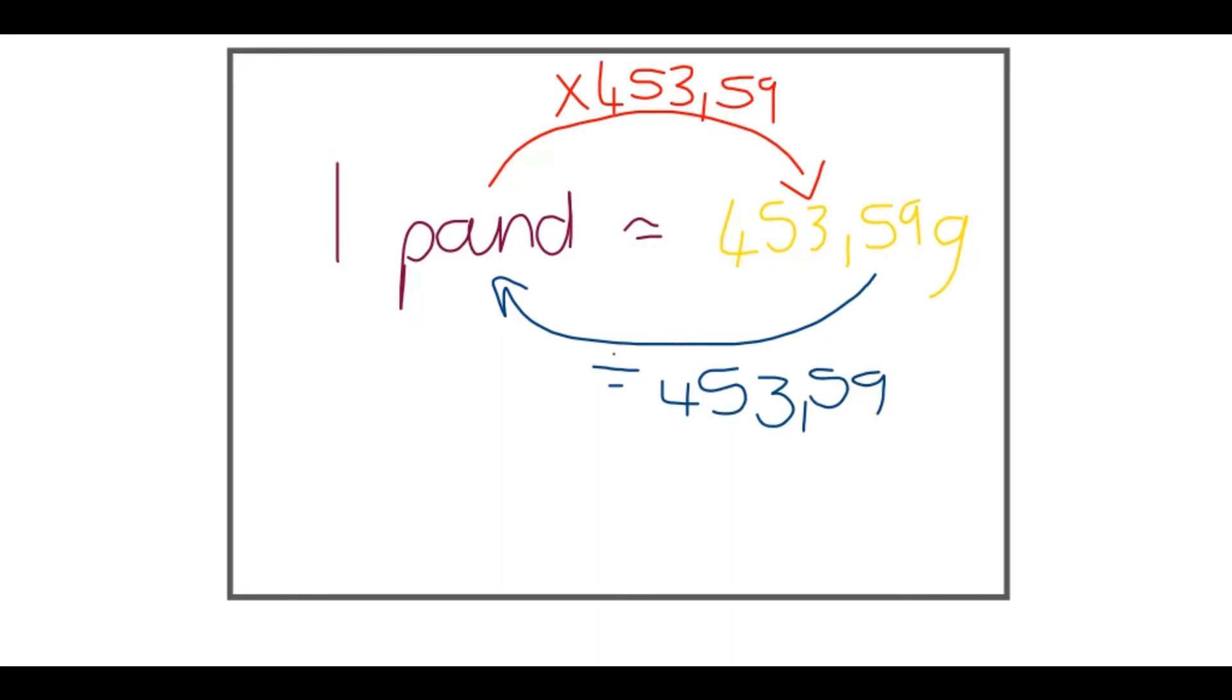Now, let's do an example that says they want us to convert 1360.77 grams to pounds. So, it's grams to pounds.